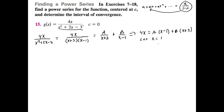Letting x = 1: on the left we get 4, on the right we get 4B, so B = 1. Letting x = -3: on the left we get -12, on the right we get -4A, so A = 3.